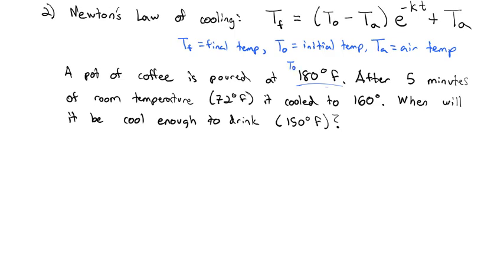We'll use the initial information given. It starts at 180 degrees. After five minutes, it cooled to 160. Room temperature is 72. Let's put this in our equation: 160 equals 180 minus 72 times e to the negative k times 5, plus 72. We have to isolate that e. We'll subtract first. 160 minus 72 is 88 equals 108 e to the negative 5k.